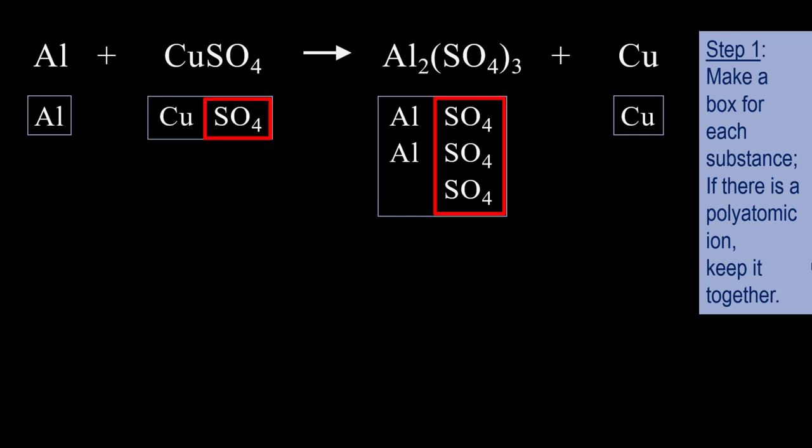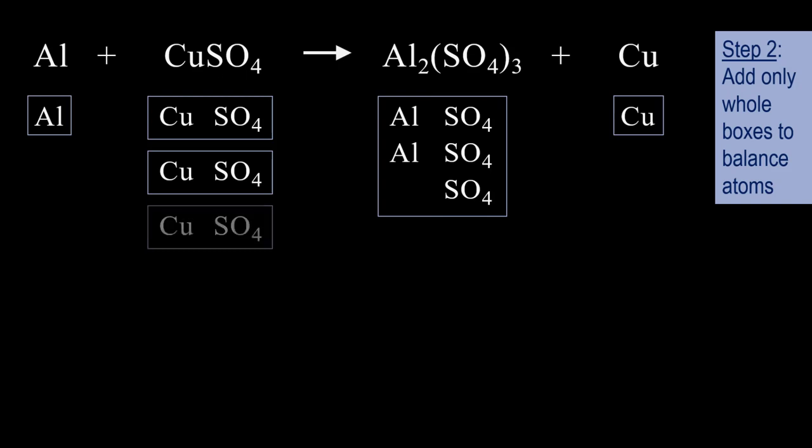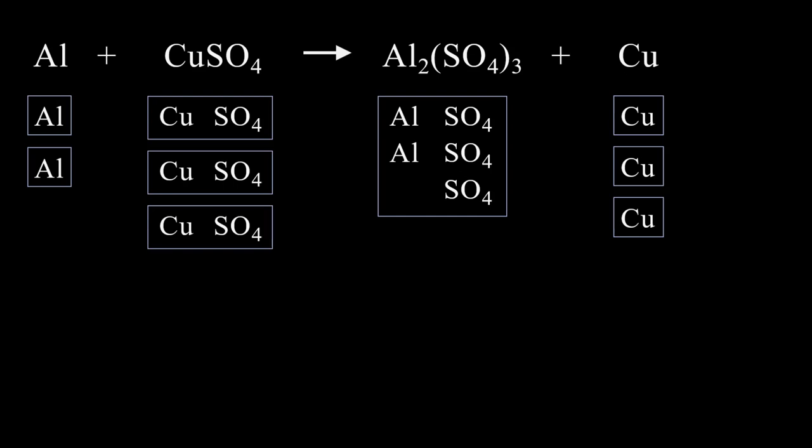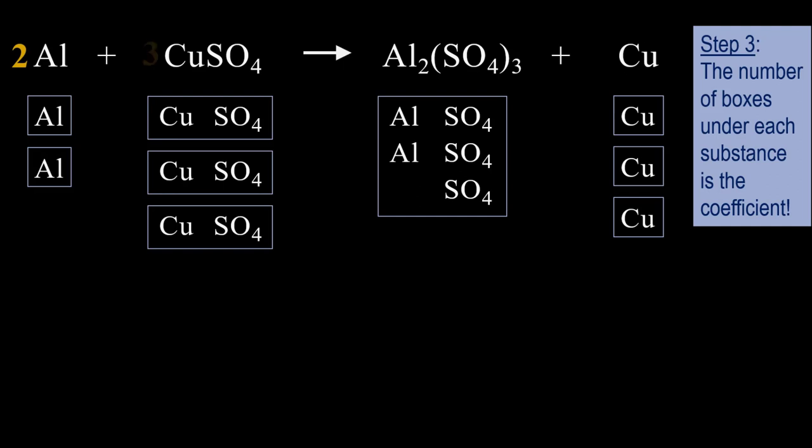So let's add 2 more boxes of CuSO4. The SO4s are now balanced, 3 on each side. 2 more boxes of Cu on the right balances the coppers, and 1 more box of Al on the left balances the aluminums. We count up the boxes and add the coefficients.